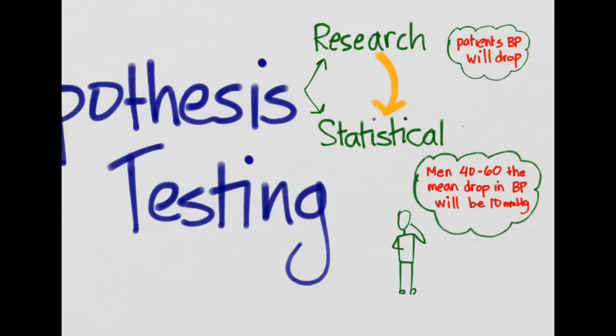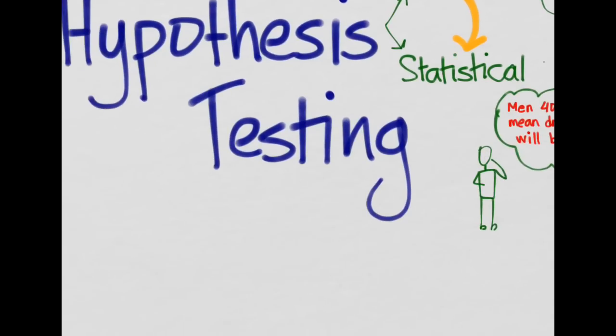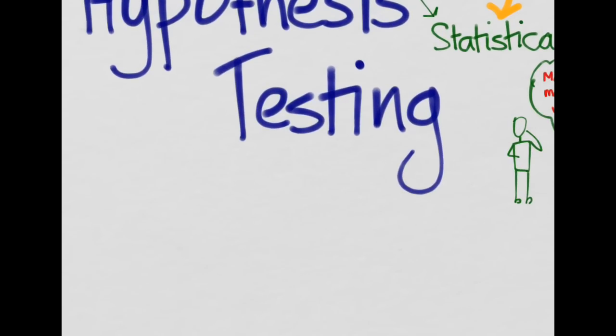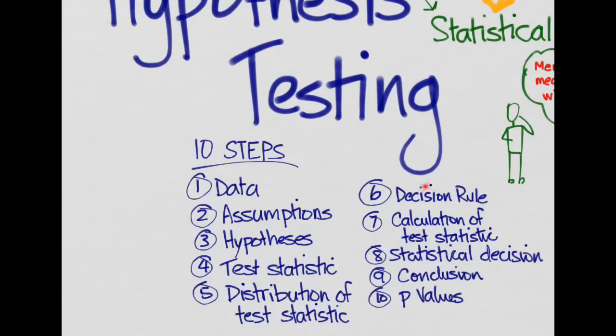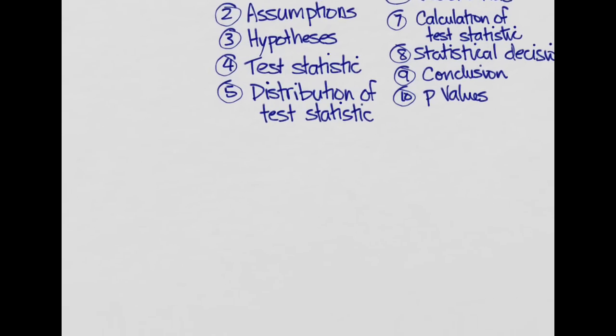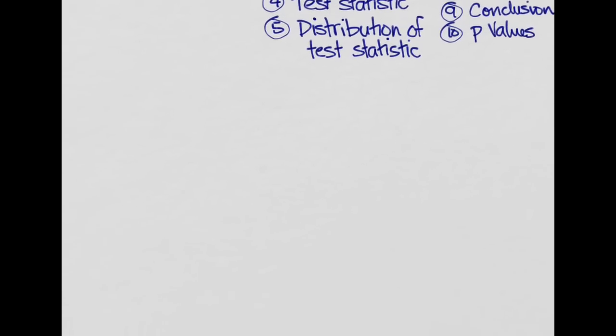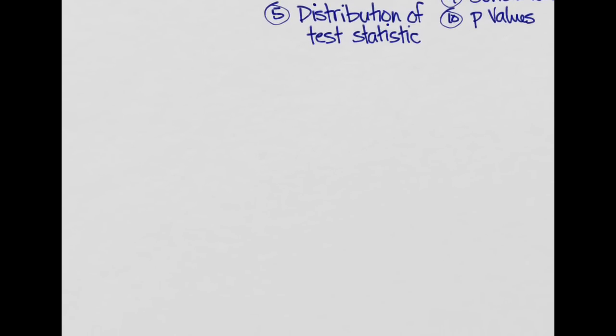Let's go through the steps. We'll break this down into the 10 steps of hypothesis testing. I know these seem like a lot, and they are — there are 10 of them — but each one is really short and we'll go through each one. So let's start with the first step, and that is data.